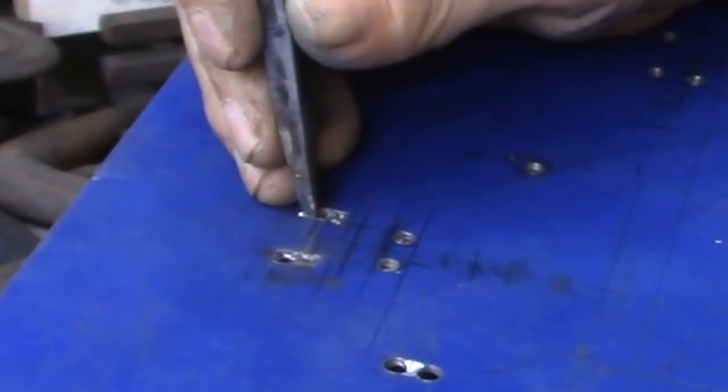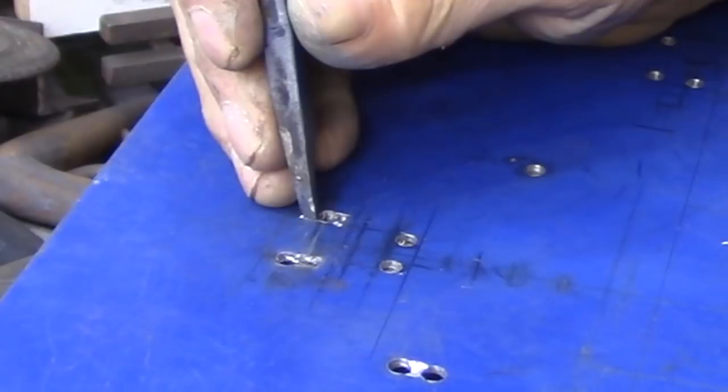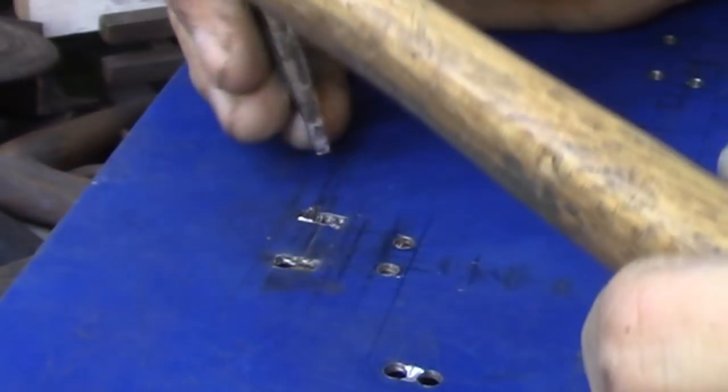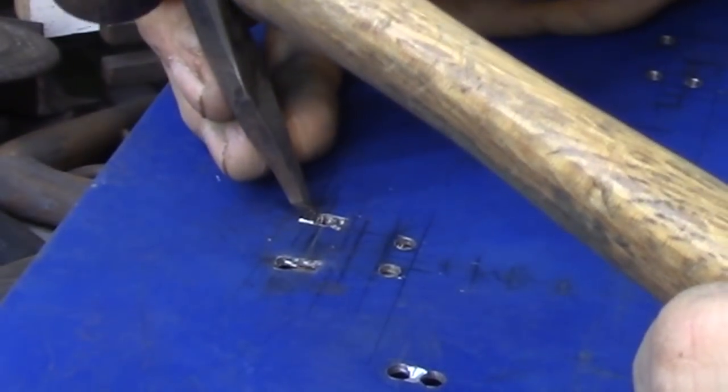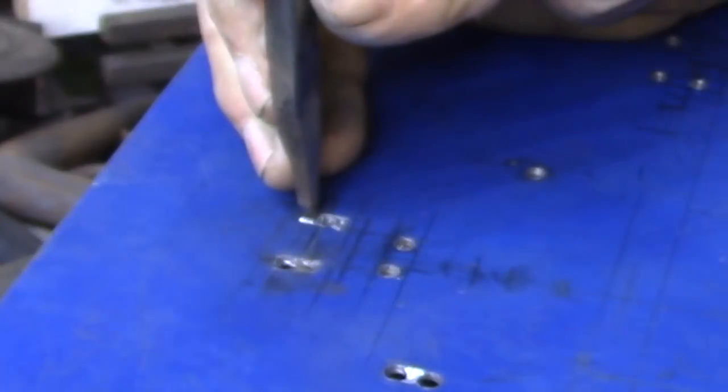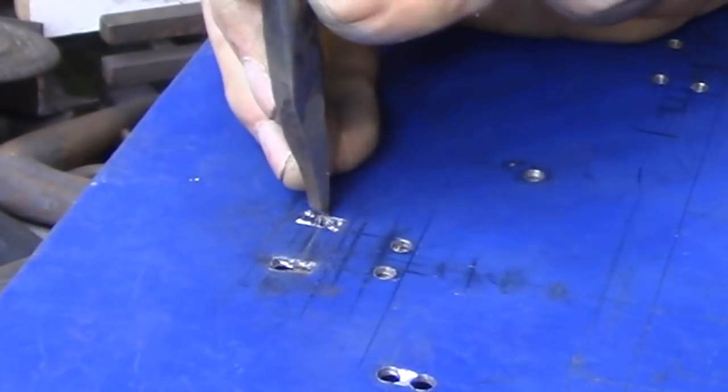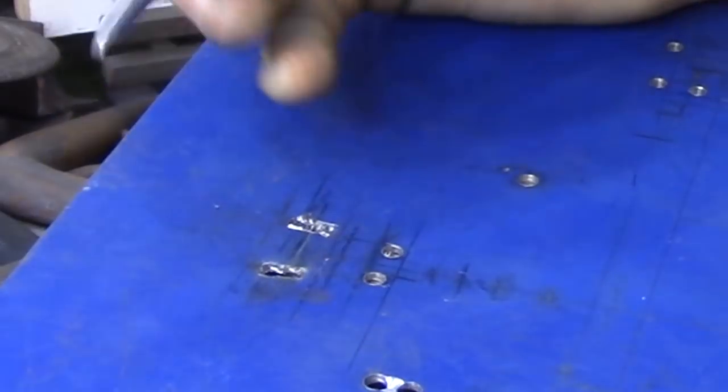I'm not concerned about removing the material here I'm basically just outlining this rectangle that I need to remove and I'm using the chisel to just chop up the entire surface within that rectangle. The hole that I've drilled allows the metal to move around as I'm chiseling it so I'm not putting any stress into the plate as I'm driving the chisel into the surface.